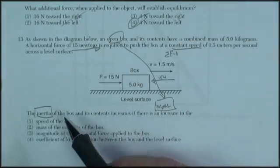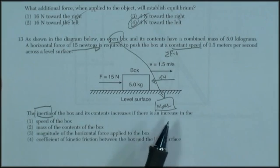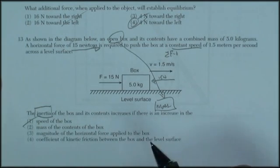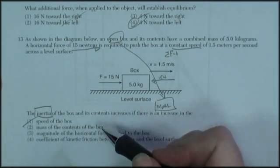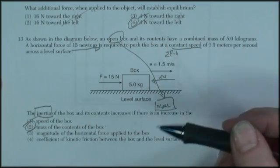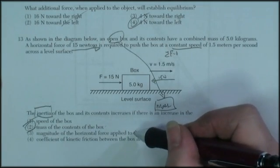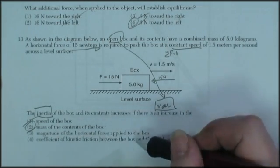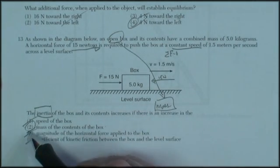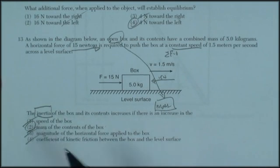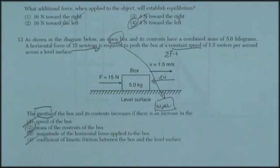Let's look at the choices. The inertia increases if there's an increase in the speed? No. Mass of the contents of the box? Yes, that's the correct answer. Magnitude of the horizontal force? Nope. Coefficient of kinetic friction? Nope. 2 is the correct answer. Inertia means mass. Mass means inertia.